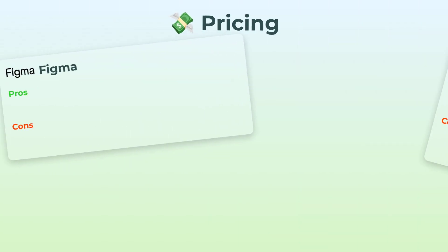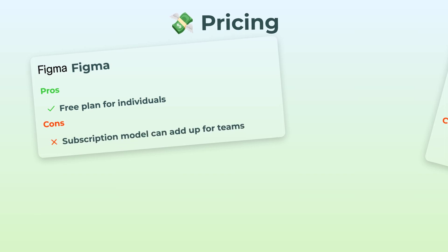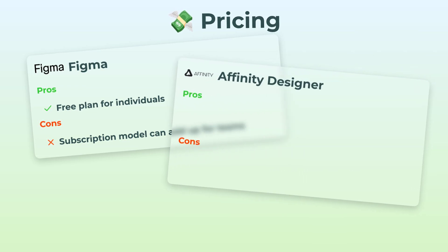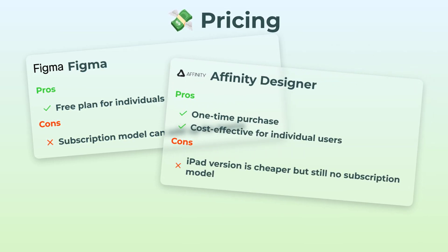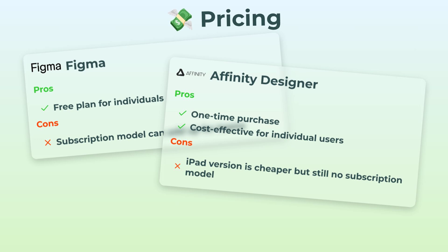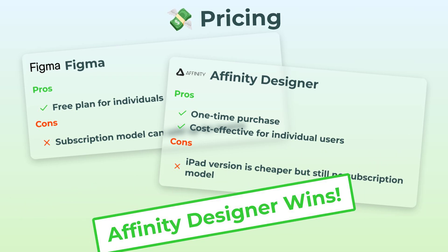Let's kick things off with pricing. Starting with Figma, it's got a free plan for individuals, which is pretty sweet if you're just starting out or working solo. But if you're scaling up with a team, the subscription fees can really stack up over time. Affinity Designer just drops the mic here — a one-time purchase and you're set. No recurring charges, which is refreshing, and it's super cost-effective if you're working solo. The iPad version is cheaper, and there are no subscriptions anywhere. Affinity Designer is clearly grabbing the win for anyone watching their budget.